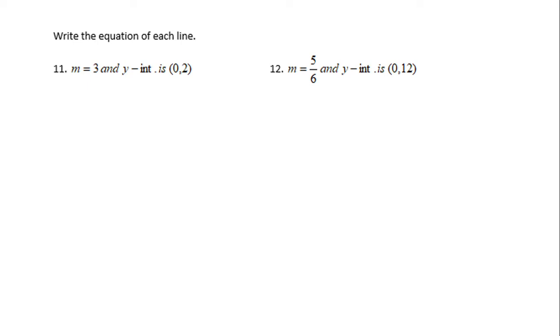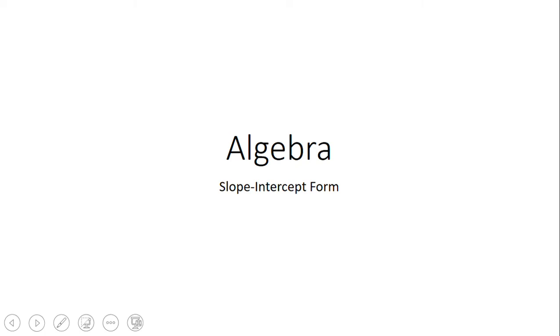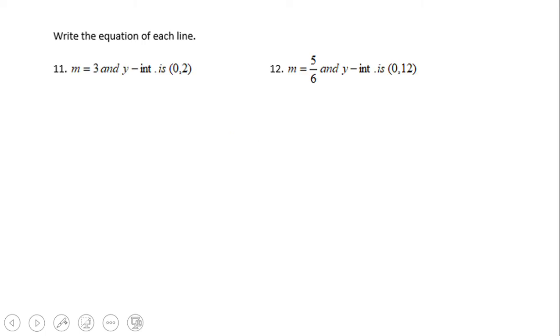We're looking now at number 11 and 12. Very easy examples, I like to call this one a five-second problem. Why? Because look at here what this is about. It's about writing this famous form called the slope-intercept form, y equals mx plus b, and just plug the information in. We have the slope given 3, the y-intercept given (0, 2). We're going to need only that. M equals 3, b equals 2, and that's it pretty much.